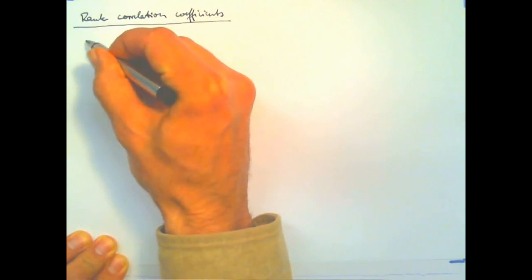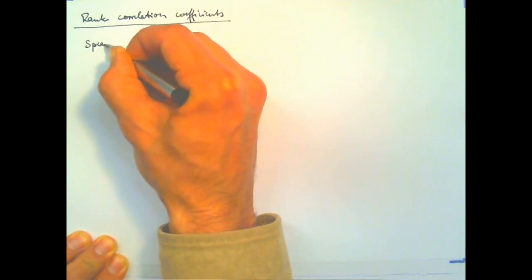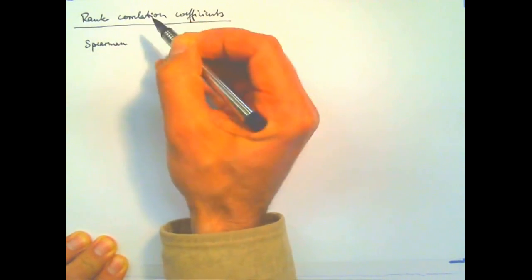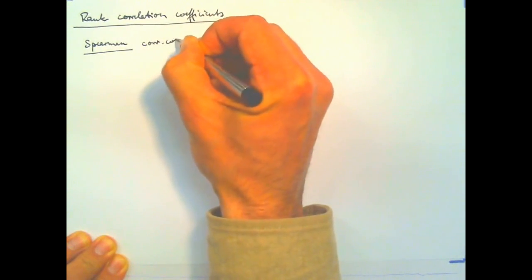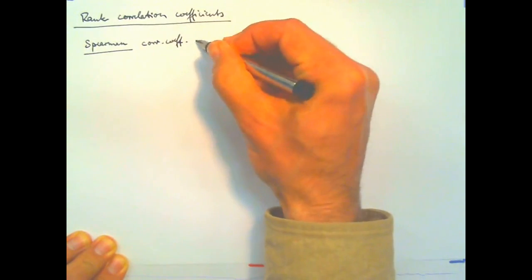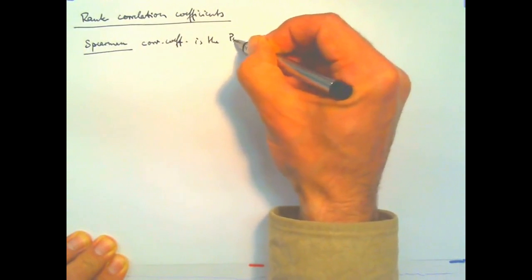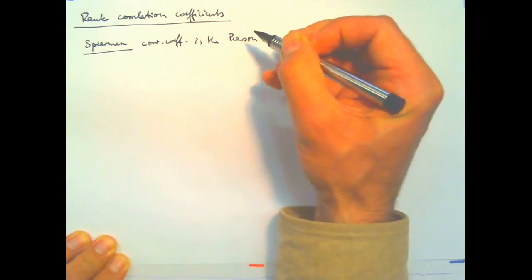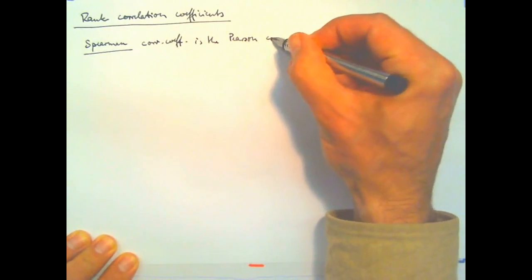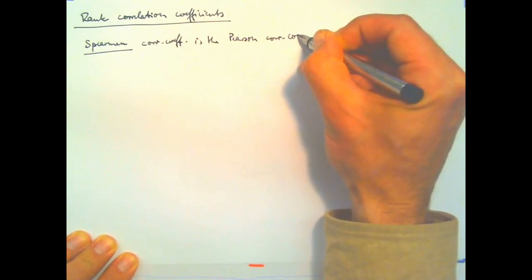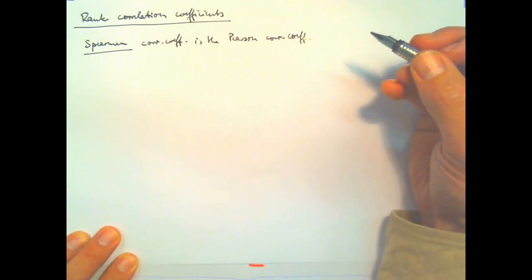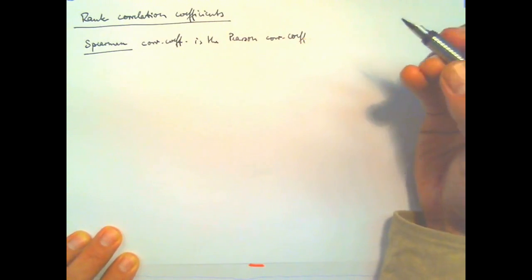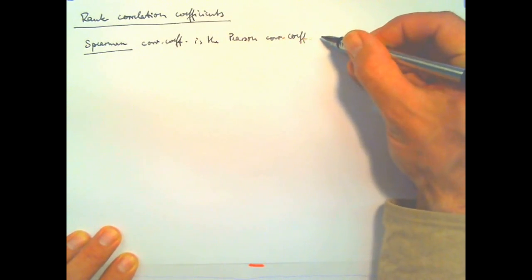On the one hand, the Spearman correlation coefficient, which is the normal or Pearson correlation coefficient, however, not between the original observations or variables, but between the separately ranked observations.